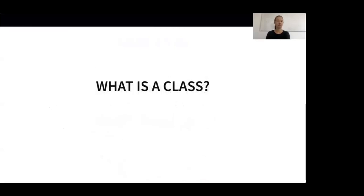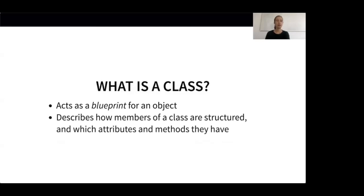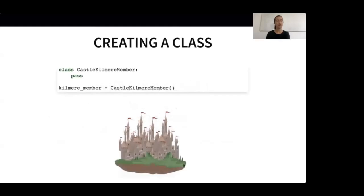So what is a class? A class acts as a blueprint for an object. It describes how objects — so-called members of a class — are structured and which attributes and methods they have. The syntax for creating an empty class is quite simple. We start our universe with the class CastleKilmierMember. Our class currently doesn't contain any code, so we use the keyword pass as a placeholder in the body. Pass can be used to denote places where we will eventually put code, and right now it allows us to run this code without getting an error.